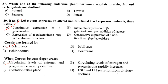In an E. coli mutant that expresses an altered non-functional lac-I repressor molecule, the repressor will not bind to the operator, and RNA polymerase will be able to bind to the promoter. There will be constitutive expression of beta-galactosidase. Answer is option A.